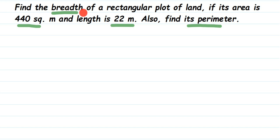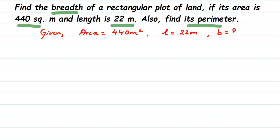Let's write down what we know from the question. The area of the rectangle is 440 meter square, and the length is equal to 22 meter. We have to find the breadth first, and then using the breadth we'll find the perimeter. Since we know the area, we'll use that to find the breadth.